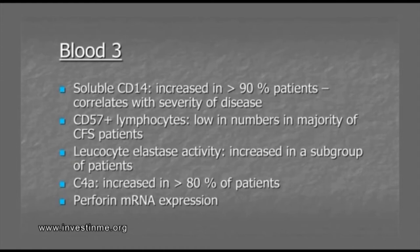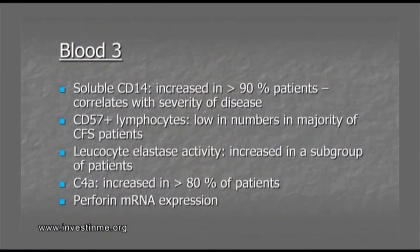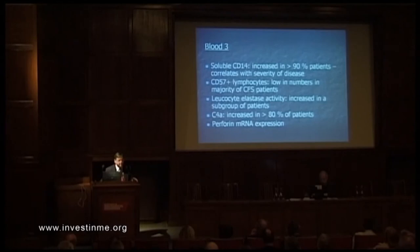A subgroup of patients has high leukocyte elastase activity. High leukocyte elastase activity can happen when you smoke, but most ME patients are non-smokers, and we still see a subgroup with high elastase activity. Then we have fragmented complement 4, which is increased in more than 80% of the patients, showing signs of chronic immune activation. And there is perforin messenger RNA expression, which can be low or high, and that has to be looked at individually.